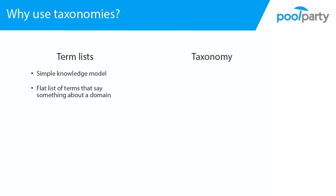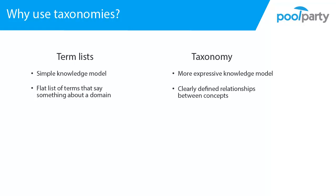Taxonomies, on the other hand, are much more expressive knowledge models. In a taxonomy, you have clearly defined relationships between concepts. In a simple taxonomy, you have a hierarchical structure. This means that you have parent-child, or broader-narrower, relationships between your concepts.